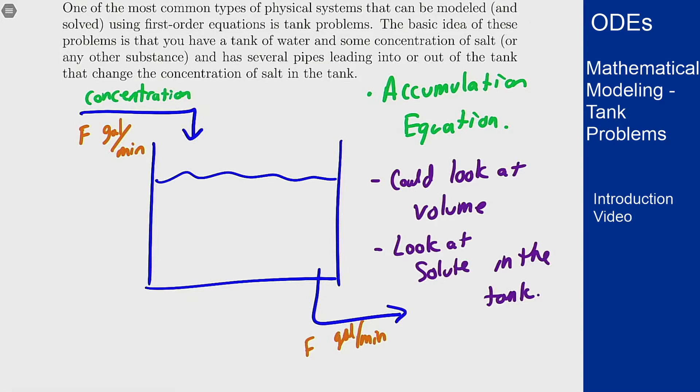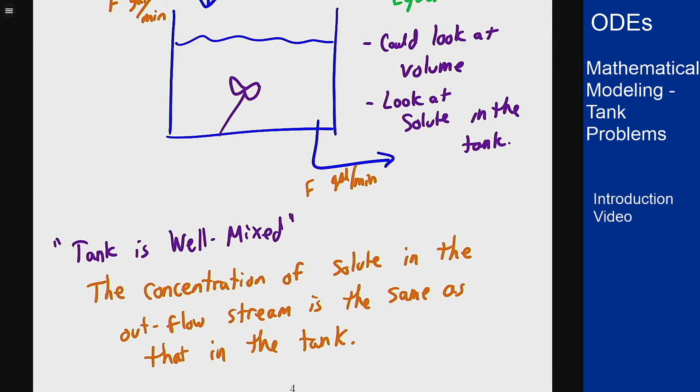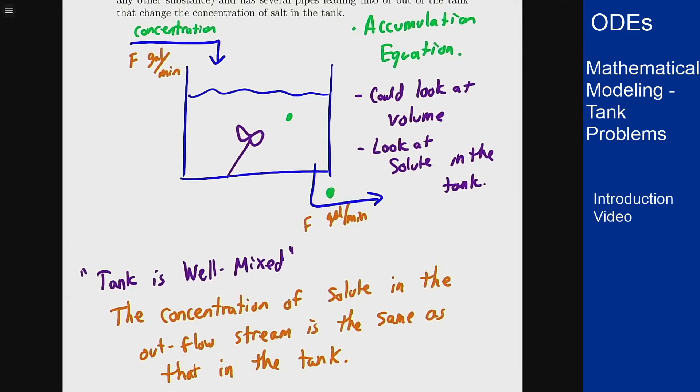The normal assumption for these sorts of problems is that the tank is well mixed. It will be illustrated by having a little mixer in there. What this means in terms of setting this problem up is that the concentration of solute in the outflow stream is the same as the concentration in the tank. It means if I know how much is in the tank or I have an unknown function for how much in the tank as a function of time I can use that same value to represent the amount in the outstream. By looking at amount in, amount out and dealing with the accumulation equation that will let us write a differential equation to model this sort of situation.